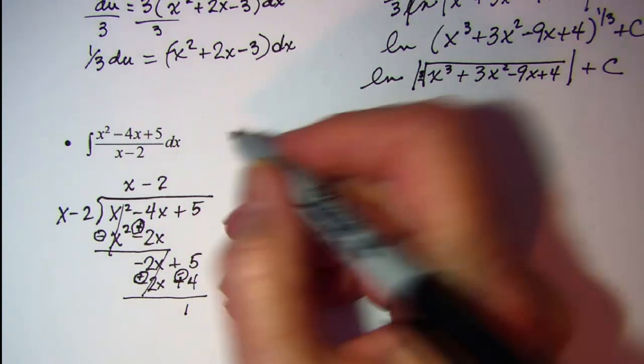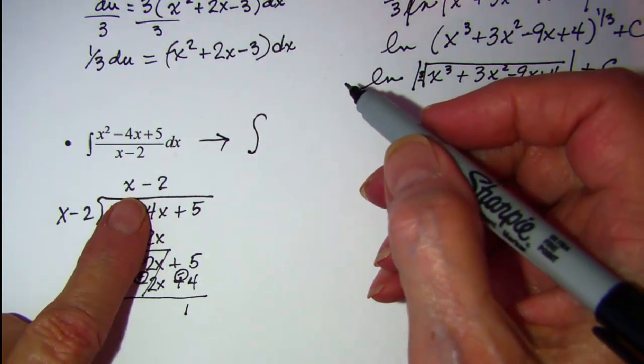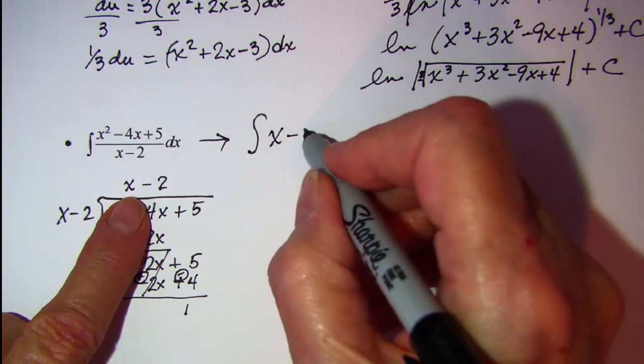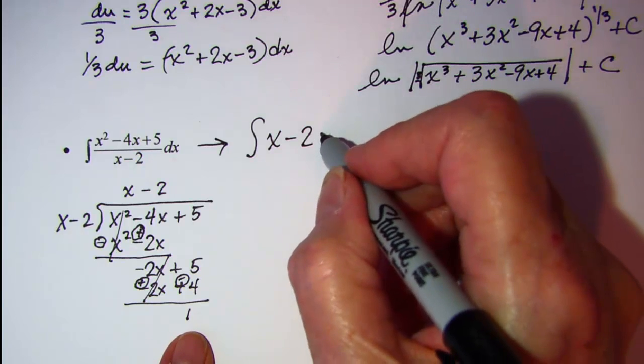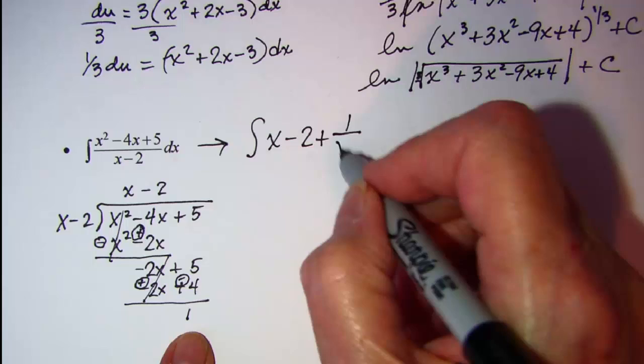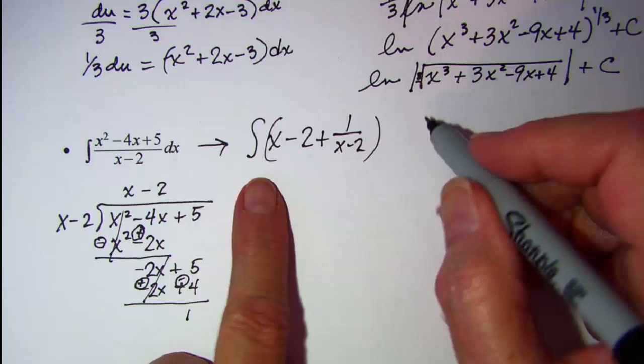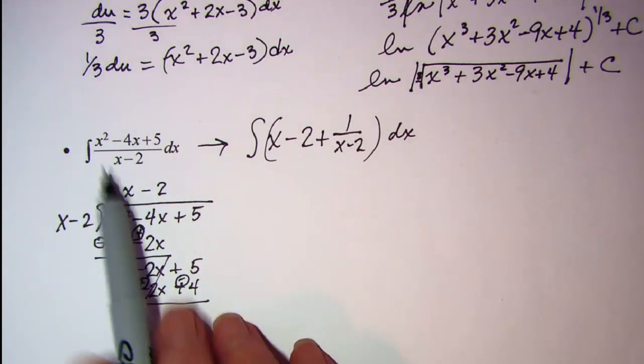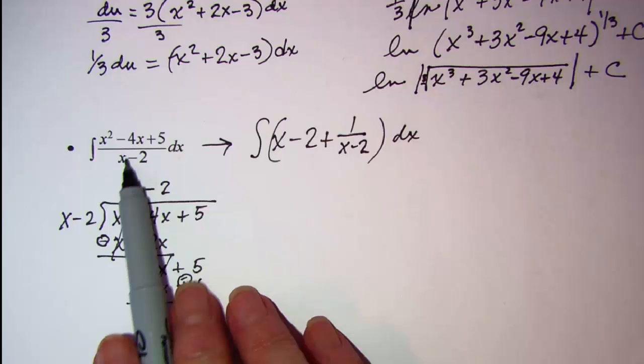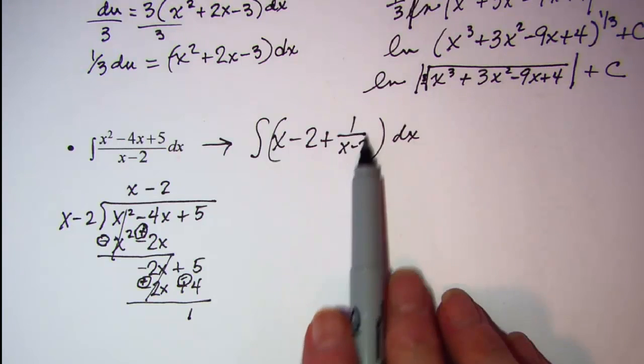So my problem now is the integral of x minus 2 plus the remainder of 1, which I have to write as plus 1 over x minus 2, and that all is integrated with respect to x. So even though this degree was one bigger than the denominator, I do need to use my log rule on this term.